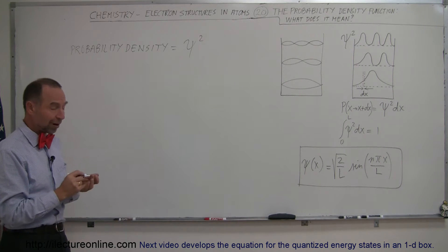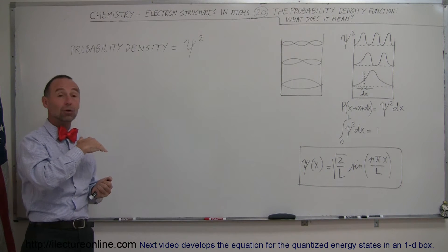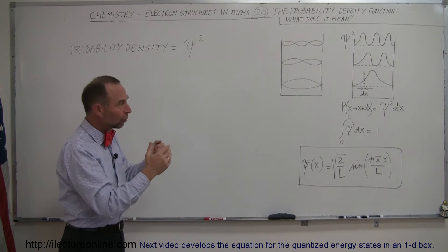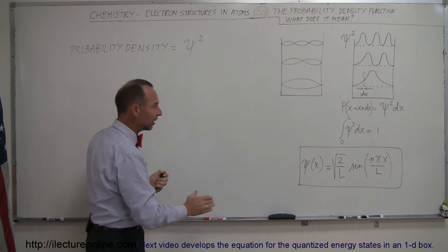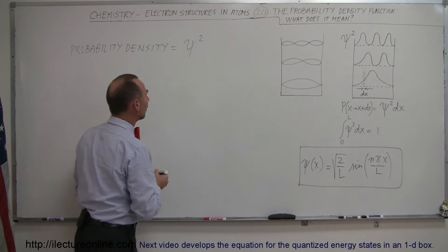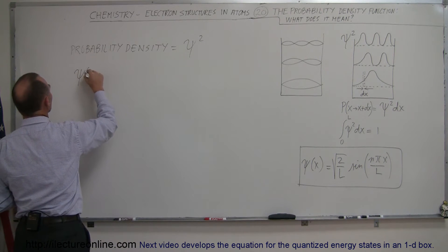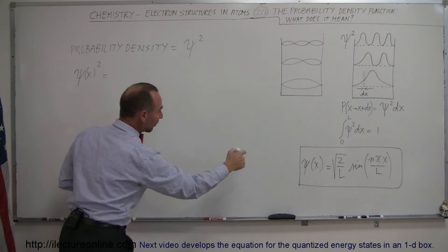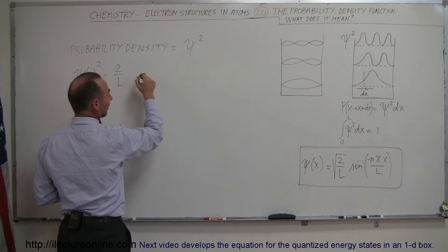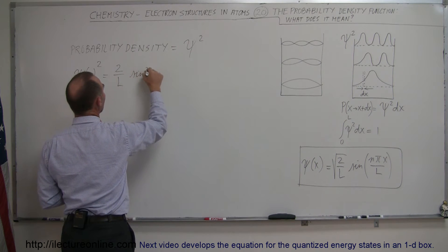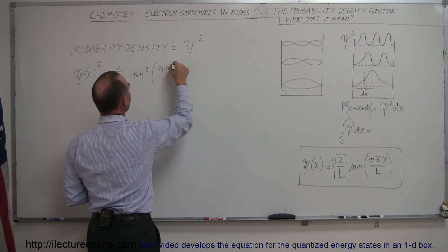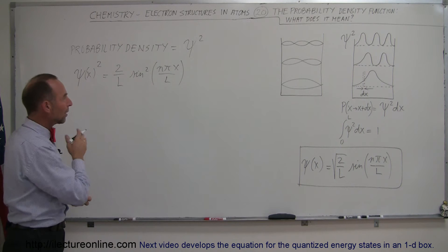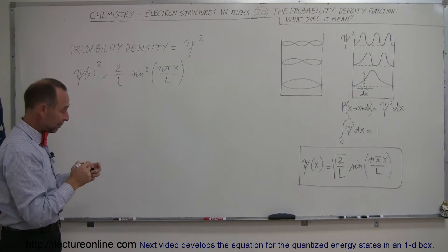For example, later on we want to figure out where we'll find the electron in an orbit around the hydrogen atom, and we'll learn about the various combinations of different states. Now let's take the wave function and square it. The wave function is a function of position in the x direction, and squaring it gives us: 2 divided by L times the sine squared of nπx over L. This tells us the probability of where in the x direction we're most likely to find the particle.